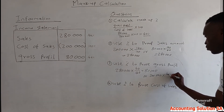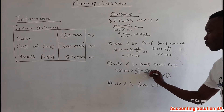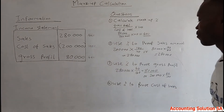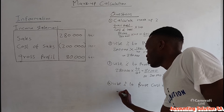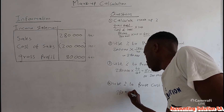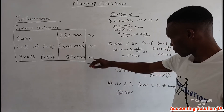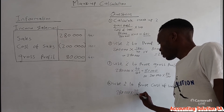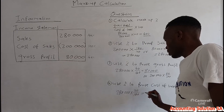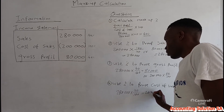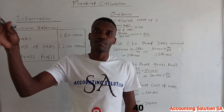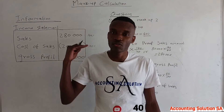The last one: use the percentage to prove cost of sales. You say 280,000 multiplied by what you are looking for — cost of sales — which is 100 percent, over 140 percent, and you are going to get 200,000. Simple as that. I hope you learned something in this video. Thank you so much — please subscribe to this channel if you are an accounting student.